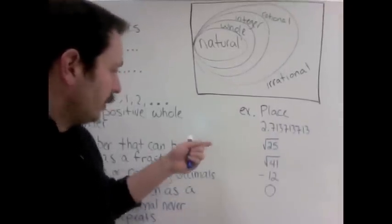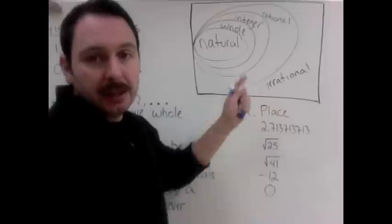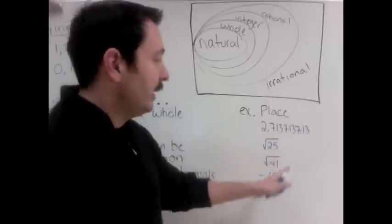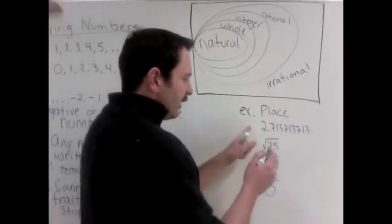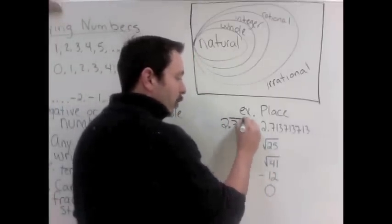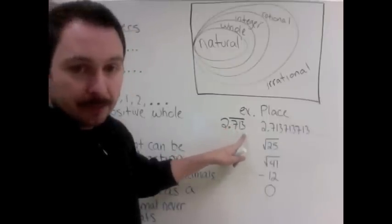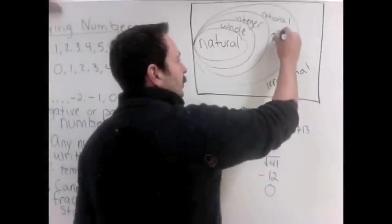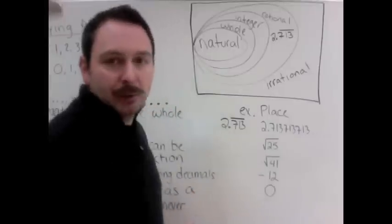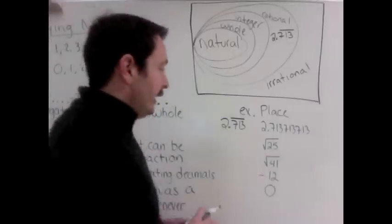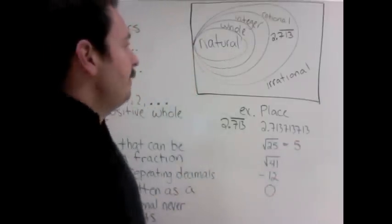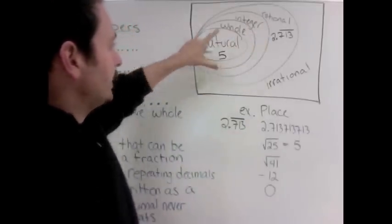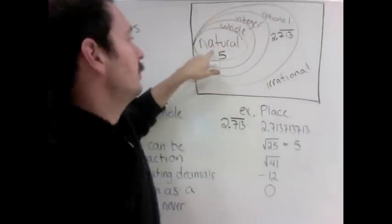So I'll show you this one. Place these numbers into our graphic. Where would you put 2.713713713? It's a decimal. It's not terminating but it is repeating. Another way you might see this written is 2.713 with a bar over it. A bar over it means that part's repeating. So it is a repeating decimal, so it is a rational number. We put it in the rational bin. Next, square root of 25 is 5. Well, 5 is a natural number. It is also whole and it is also an integer, but we put it in its greatest set. So natural is within the others, so we put 5 in natural.